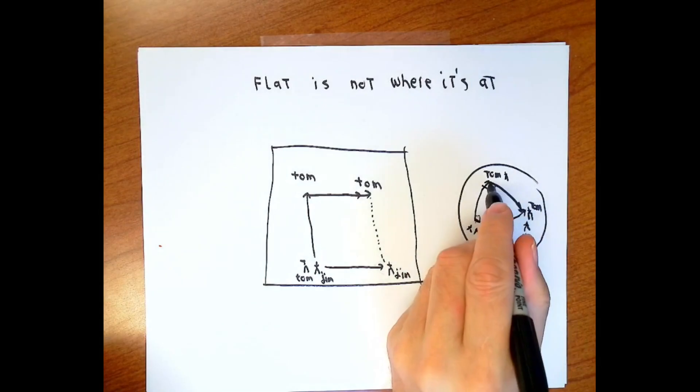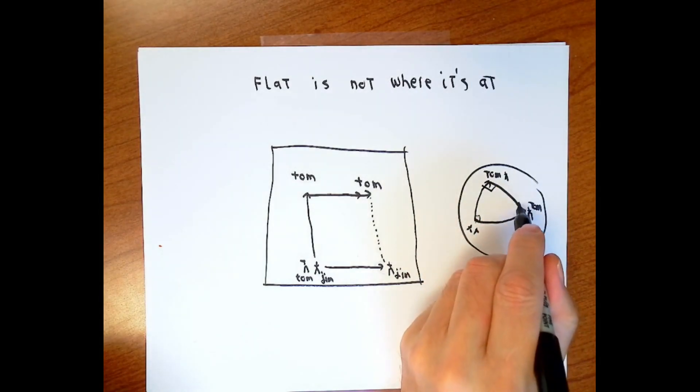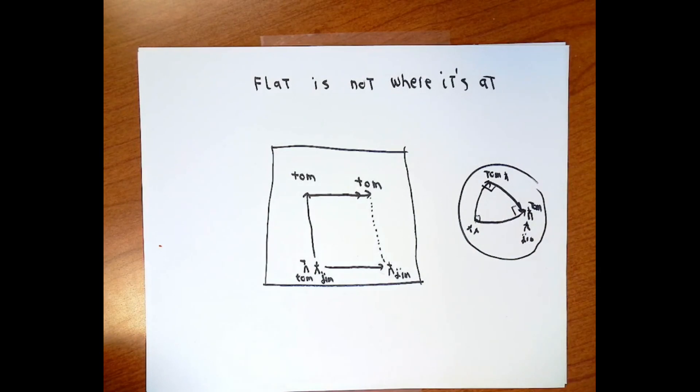He begins traveling towards Jim unknowingly. You would end up with a triangle that had three right angles in it, 270 degrees. This is impossible, of course, if you're in a flat Euclidean surface, but it isn't impossible if you're in a curved surface.